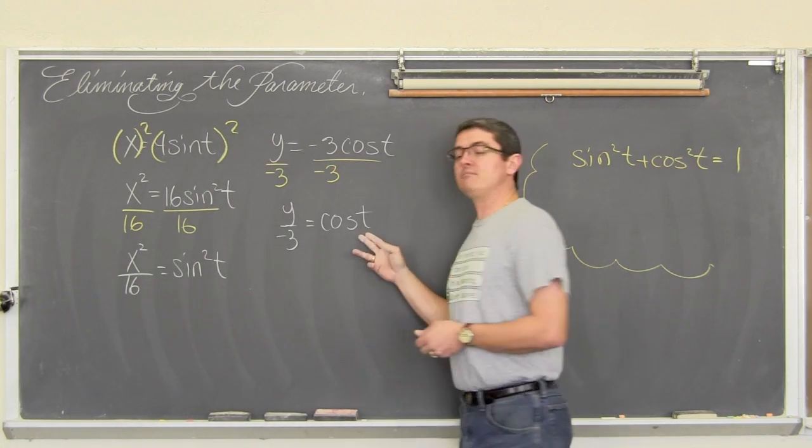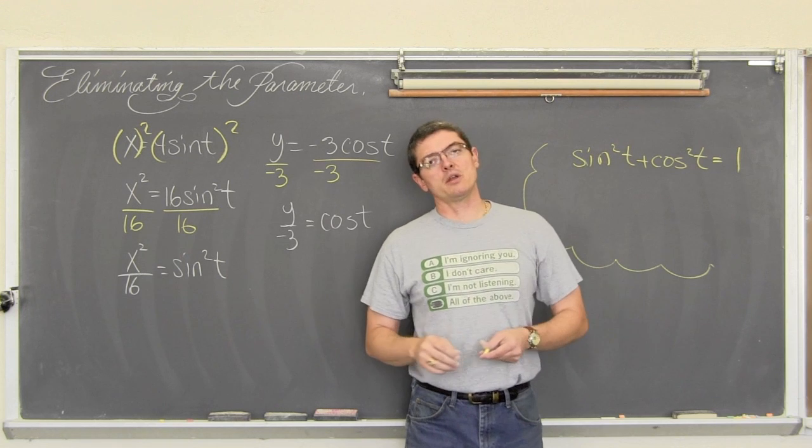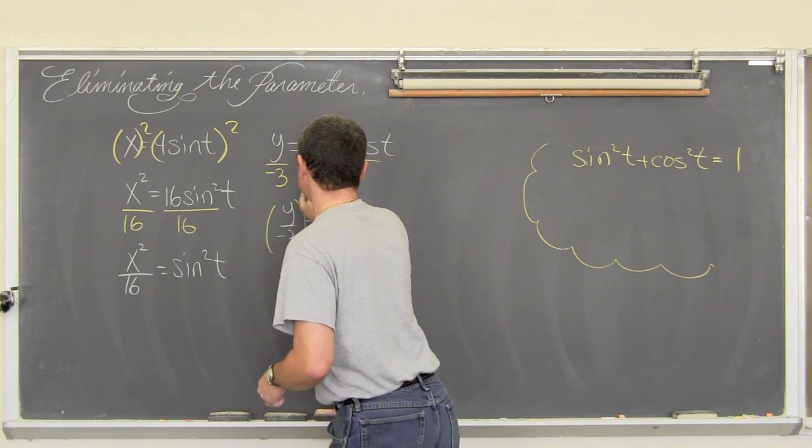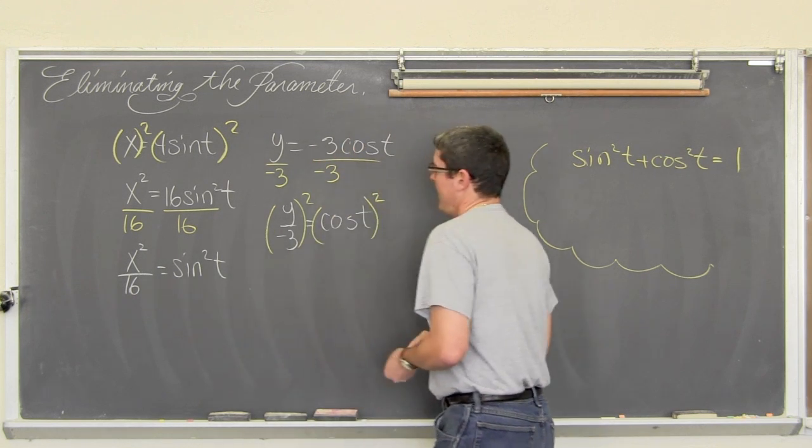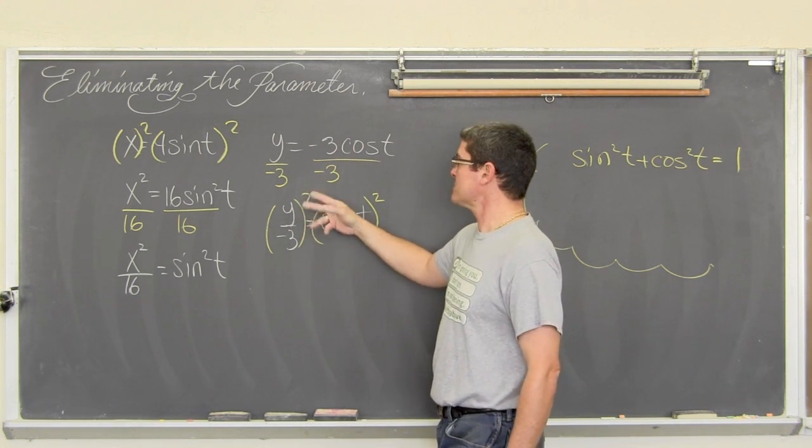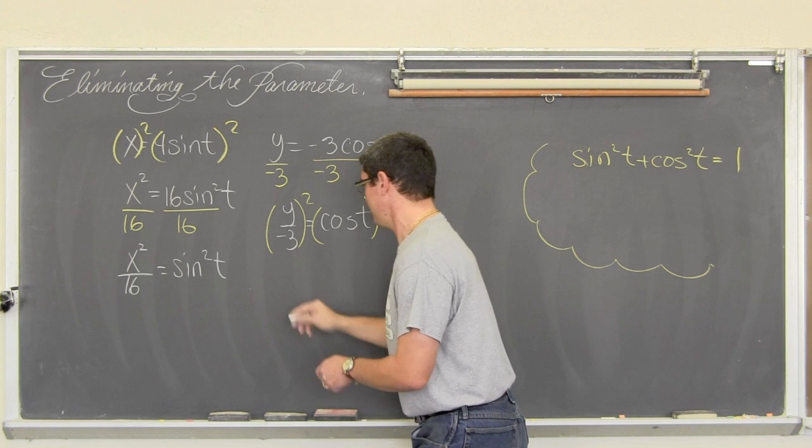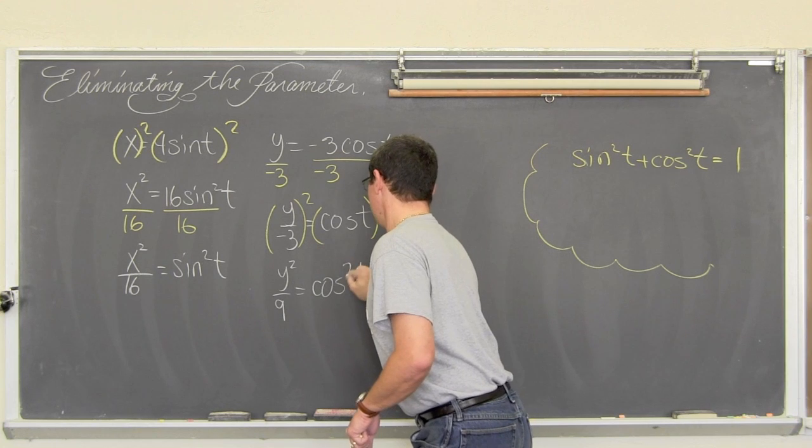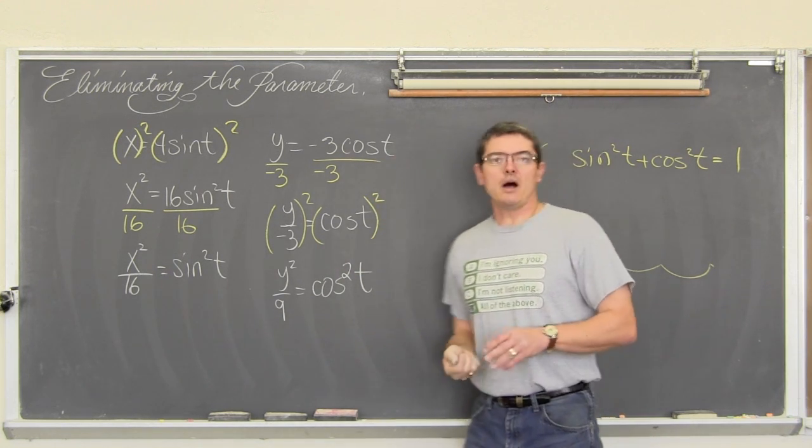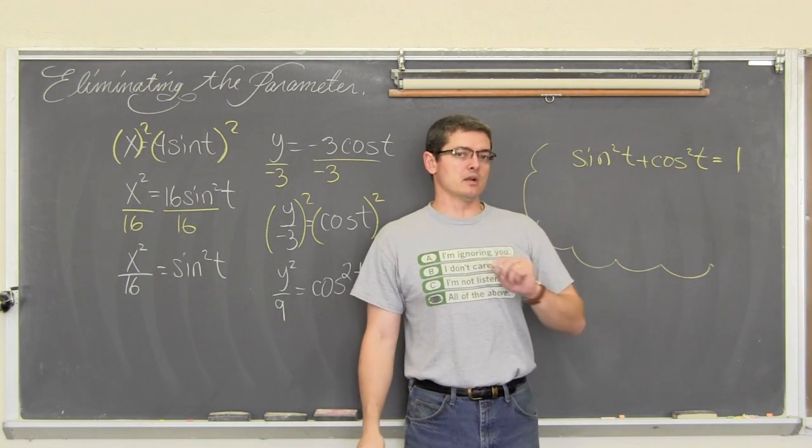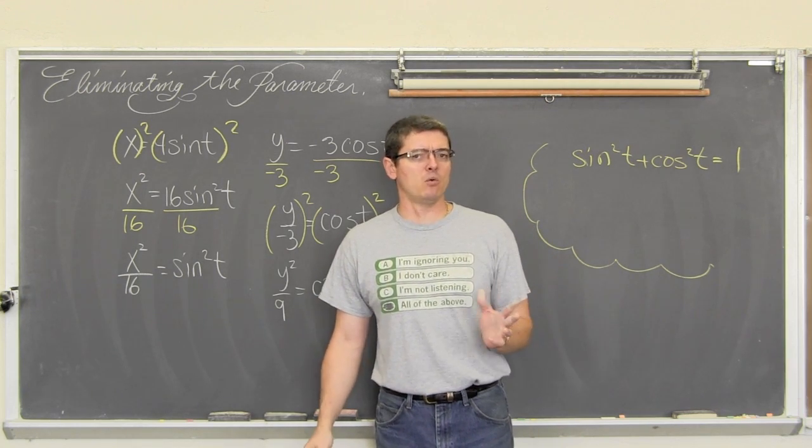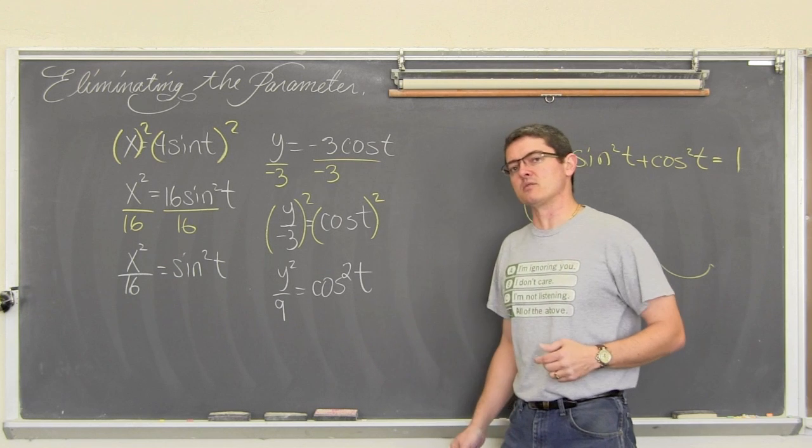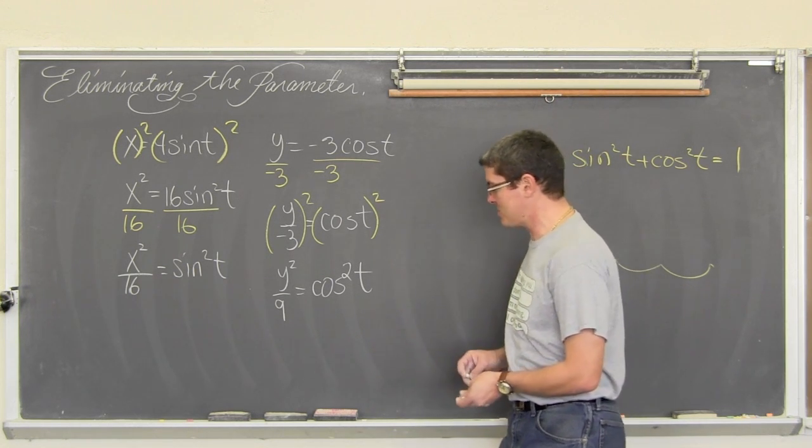Now I need sine squared plus cosine squared equals one. So I need my cosine to be squared as well. So I am going to square both sides of that equation. And when you square a fraction you have to square the top and bottom. So y squared over 9 equals cosine squared t. Now I want sine squared plus cosine squared. So I can let the entire expression equal one. Sine is on the right, or sine squared is on the right, cosine squared is on the right. I am going to add these equations.